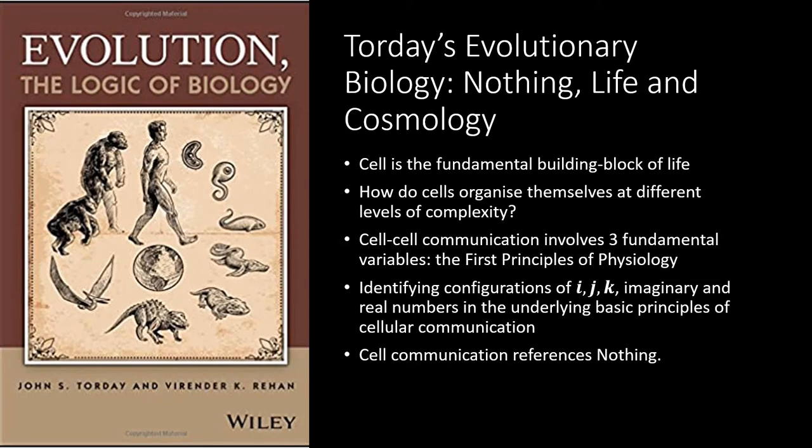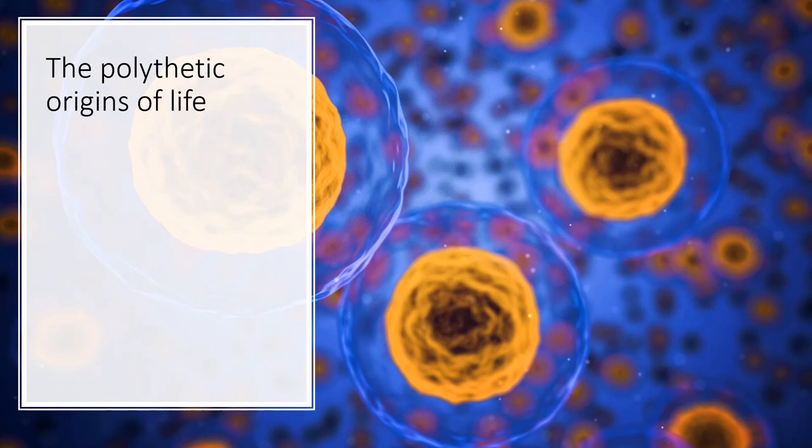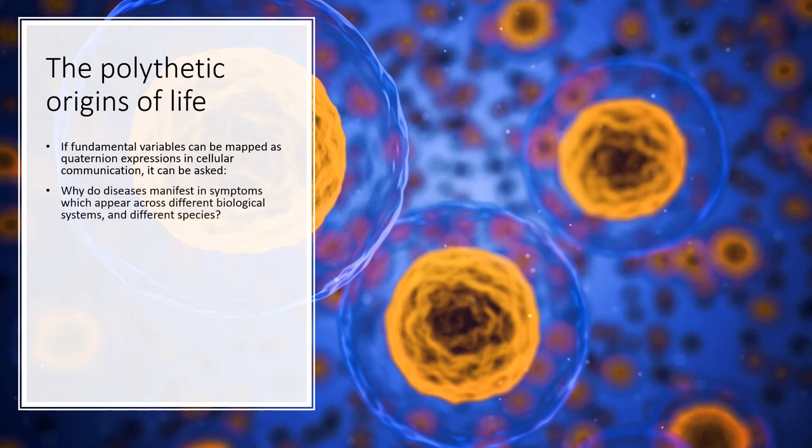In arguing for the fundamental importance of the cell and its communication, Torday raises similar questions to those addressed by Peter Rowlands. Why is it, for example, that diseases manifest themselves in symptoms which appear to be closely related, but distributed across different biological systems in the body? So for example, eczema and asthma are closely related conditions, but one affects the lung and the other the skin. But also, similar conditions apply across species and similar biological phenomena can be observed at different levels of evolutionary organization.